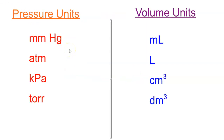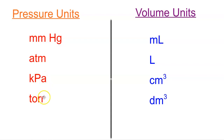Before we get too far into this, I just wanted to quickly remind you of what kind of units you have for pressure and volume. If you're looking at a numeric value in a word problem and it has one of these units, then it is a unit of pressure. A number with mmHg after it represents a pressure. A number with ATM after it represents a pressure. A number with kPa after it represents a pressure. And a number with Tor after it represents a pressure.